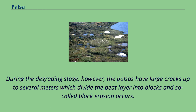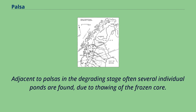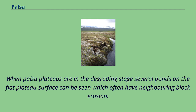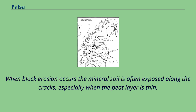During the degrading stage, the palsas have large cracks up to several meters which divide the peat layer into blocks and so-called block erosion occurs. Adjacent to palsas in the degrading stage, often several individual ponds are found due to thawing of the frozen core. Wind erosion often affects the peat layer to such a degree that it decreases in thickness by sometimes several decimeters. When palsa plateaus are in the degrading stage, several ponds on the flat plateau surface can be seen which often have neighboring block erosion. When block erosion occurs, the mineral soil is often exposed along the cracks, especially when the peat layer is thin.